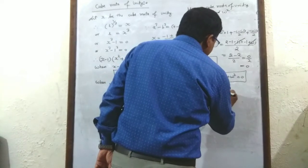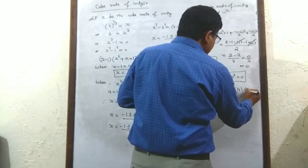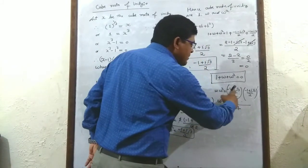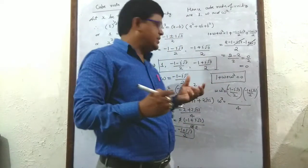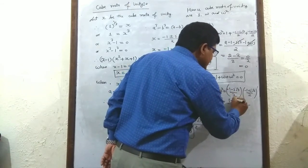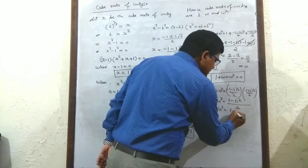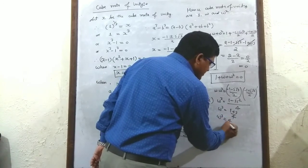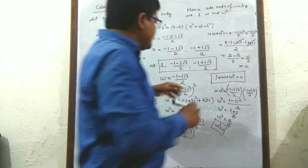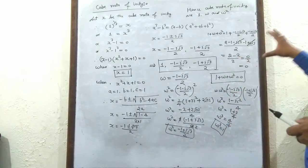Now, ω × ω² = (-1 - i√3)/2 × (-1 + i√3)/2. Applying (a - b)(a + b) = a² - b² formula: (1 - 3i²)/4. Since i² = -1, this equals (1 + 3)/4 = 4/4 = 1. So ω³ = 1, which is the second property of cube roots of unity.